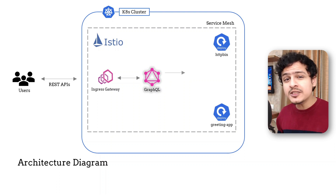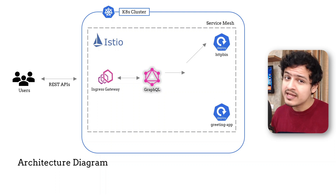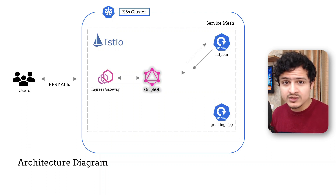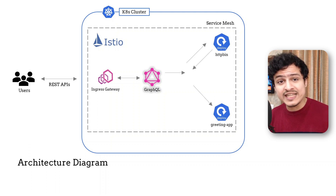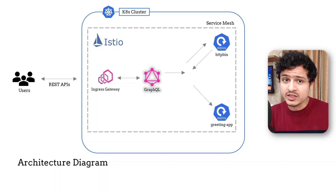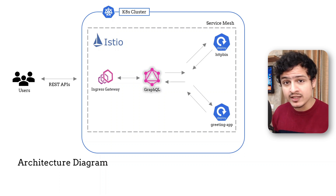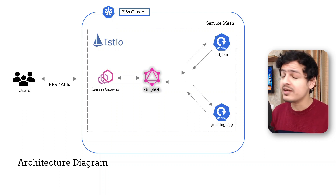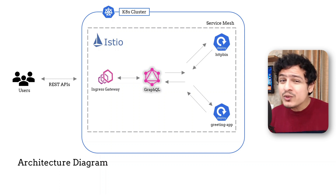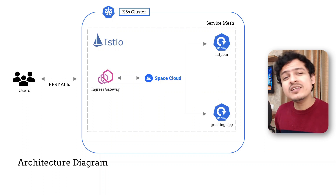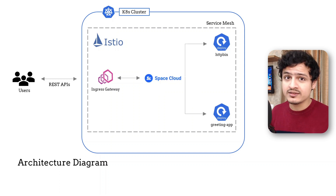In other words, it will first fire a call to the Greeter app, get its response, then forward the response to the HTTPbin service and send us back the final response. GraphQL is cool. Now because I'm too lazy to write any code, we will use SpaceCloud as our GraphQL server.